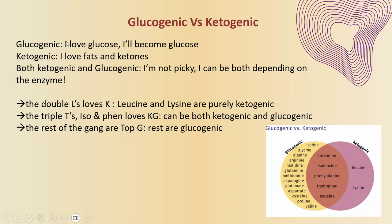We have glucogenic amino acids, ketogenic amino acids, and then amino acids that are flexible — they can become either ketogenic or glucogenic depending on the enzyme degrading them. To classify them: the double L's — leucine and lysine — are purely ketogenic. This is easy to remember because they are the only two purely ketogenic amino acids.